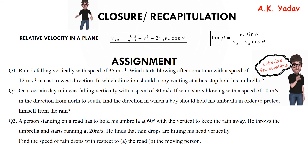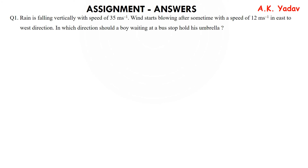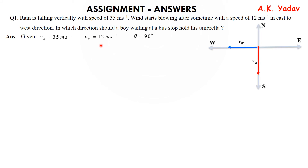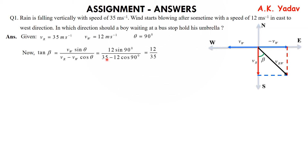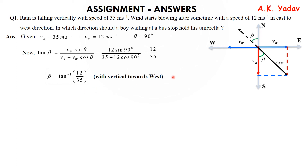Now is the time for assignment questions — try these by pausing the video, then play again to check your answers. Assignment Q1: Rain is falling vertically with a speed of 35 m/s. Wind starts blowing with a speed of 12 m/s in the east-to-west direction. In which direction should a boy at a bus stop hold his umbrella? Given: velocity of rain = 35 m/s, velocity of wind = 12 m/s, θ = 90°. Applying tan β = vw·sinθ / (vr − vw·cosθ), we get β = tan⁻¹(12/35) with the vertical towards west — that is the angle beta.